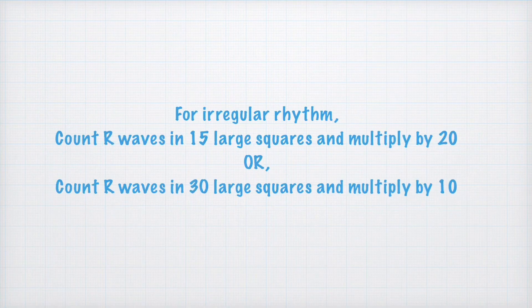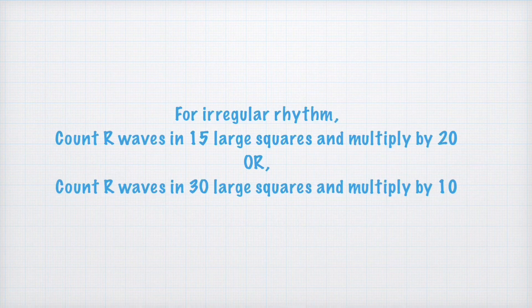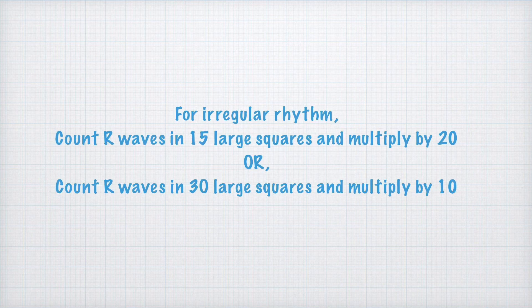If rhythm is irregular, that is, each RR interval is different, then count R waves in 15 large squares, which represent 3 seconds, and multiply number by 20, which gives heart rate per minute. If rhythm strip is available in your ECG paper, count R waves in 30 large squares, which represent 6 seconds, and multiply the number by 10, which gives heart rate per minute. So heart rate equals to number of R waves in 15 large squares times 20, or number of R waves in 30 large squares times 10.